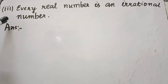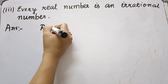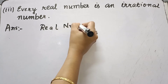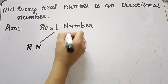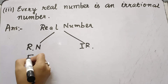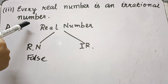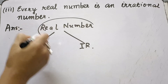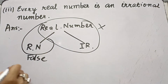The third statement is: every real number is an irrational number. As shown in the first question, real numbers are a combination of rational numbers and irrational numbers. So this statement is false because real numbers can be rational numbers also.